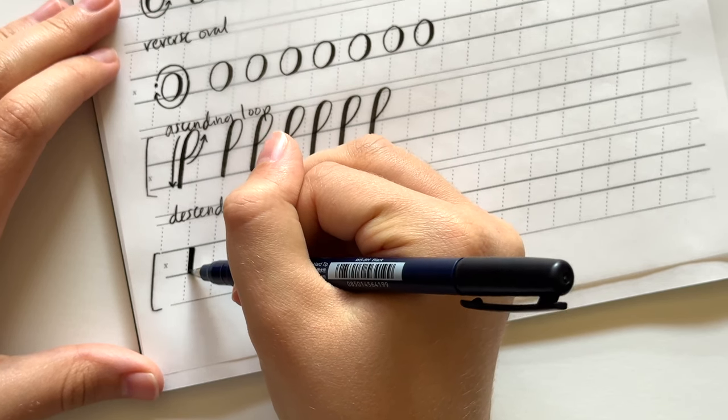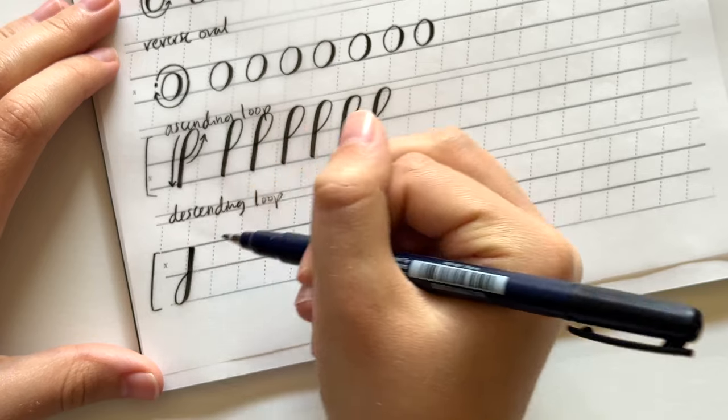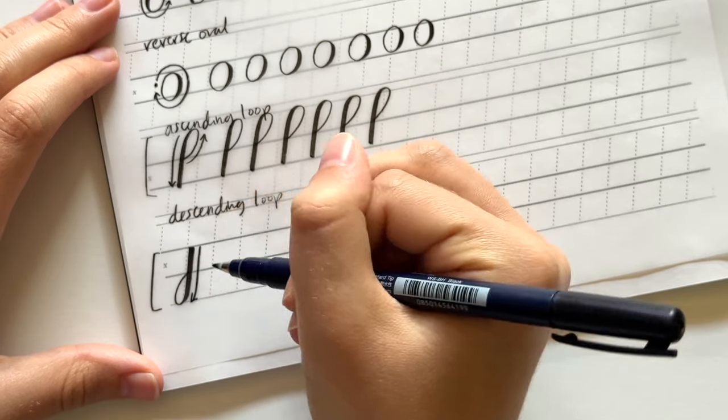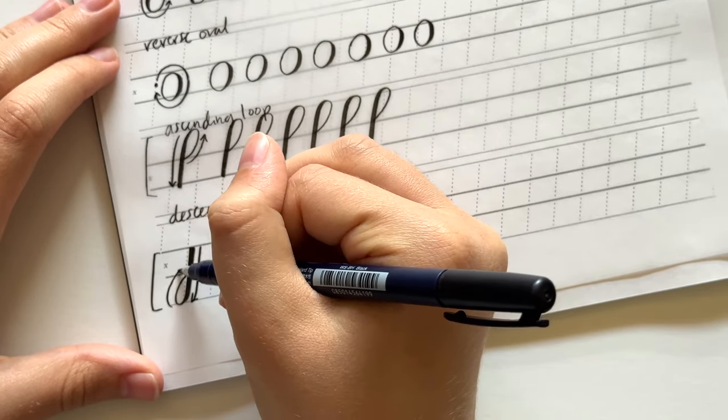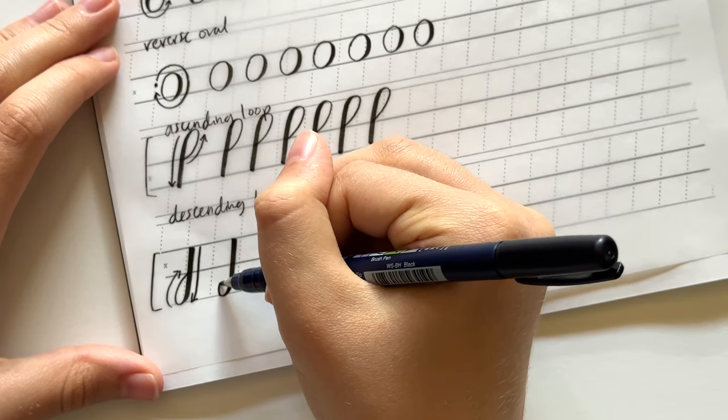The last basic stroke is the descending loop and once again this is twice the length of any of the other strokes just in a downward direction. So with this one we're coming downward with heavy pressure then we turn and lighten pressure to loop back up.